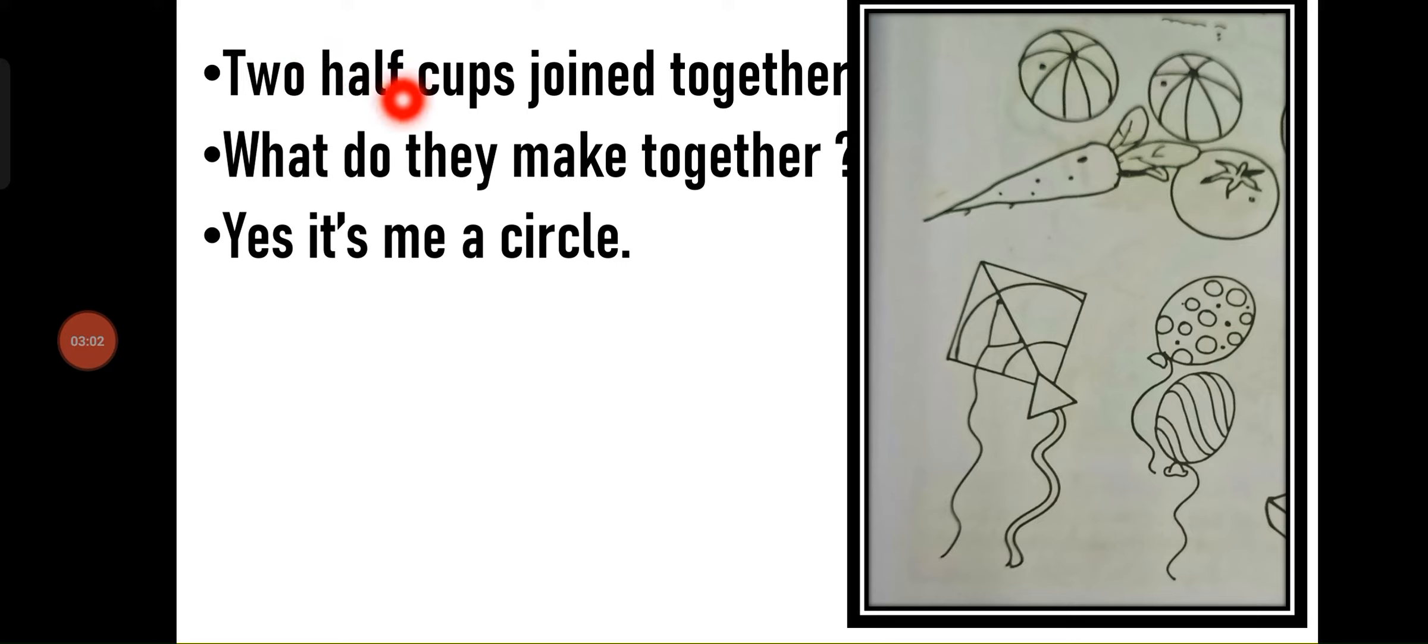Two half cups join together. What do they make together? Yes, it's me, a circle. When you join two half cups together, circle is formed. So using circle, you can make different drawing pictures.